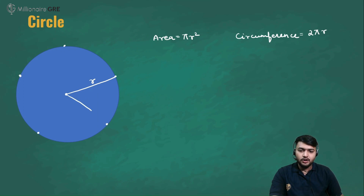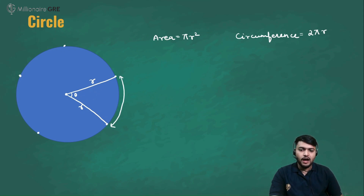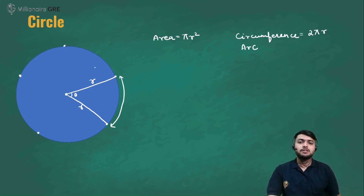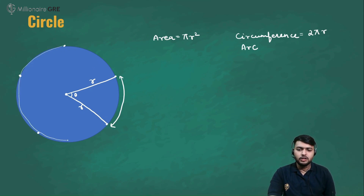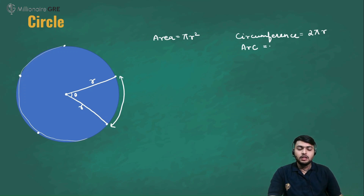If we draw another radius r and call this angle theta, the length between the two radii along the boundary is called an arc. An arc is a part of the circumference of a circle — the circumference being the full boundary or perimeter. The length of an arc is (θ/360) × 2πr.